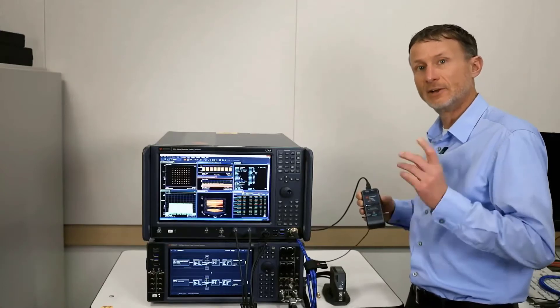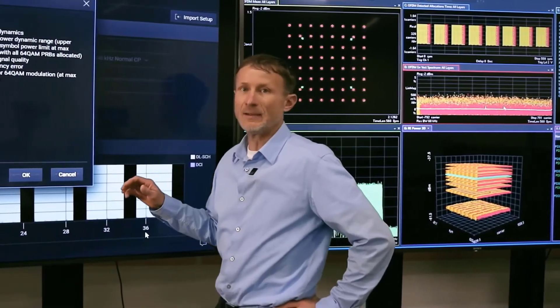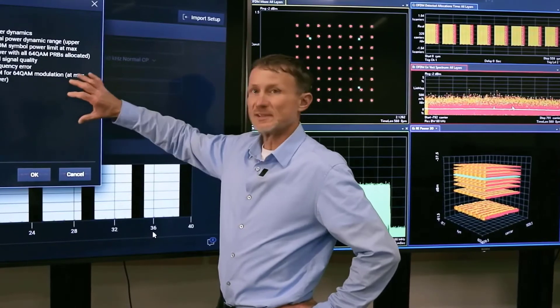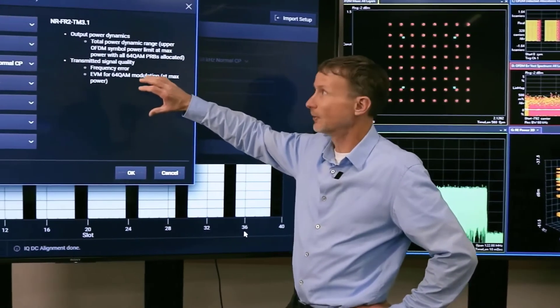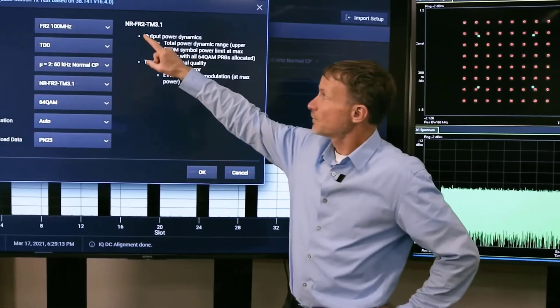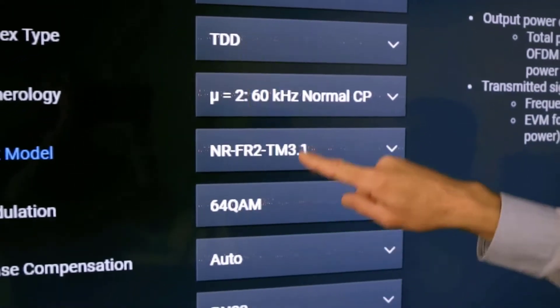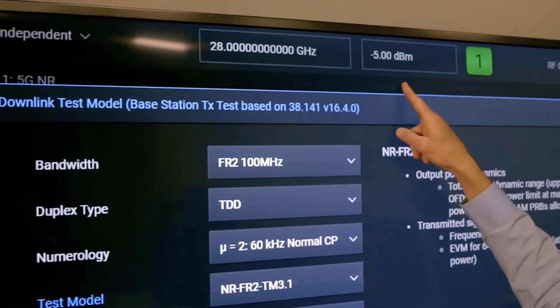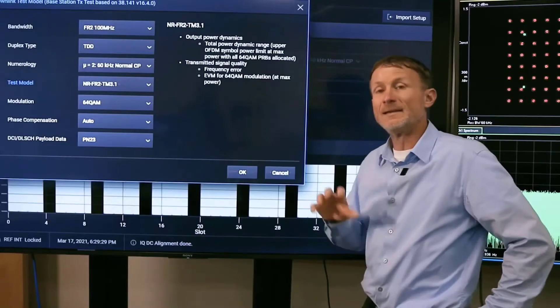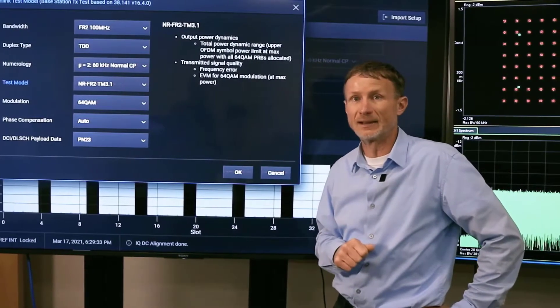Now let's take a look at our first measurement, which is going to be an EVM measurement of a new radio signal. You can see I'm using Signal Studio on the source to generate our new radio signal. I'm using a 100 megahertz component carrier configured for test model 3.1, and I'm doing this at a frequency of 28 gigahertz and a power level of minus 5 dBm. Now we're going to look at the results on the UXA using our vector signal analysis software.